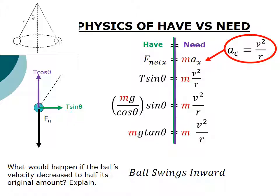Let's take a look at the physics of the have versus the need. The question is, what would happen if the ball decreased its velocity? We needed a velocity of 0.6 something meters per second. Well, what if the ball, all of a sudden, maybe air resistance or something, started slowing that ball down? What would happen?